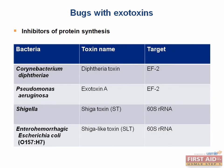Similar to Shigella, enterohemorrhagic E. coli, or EHEC, produces Shiga-like toxin. Note that EHEC is a non-invasive bug. Both Shigella and E. coli O157:H7 can cause HUS, or hemolytic uremic syndrome, by stimulating cytokine release.